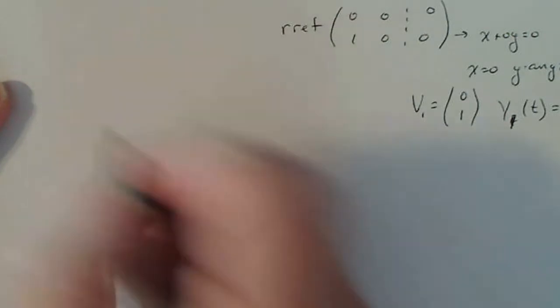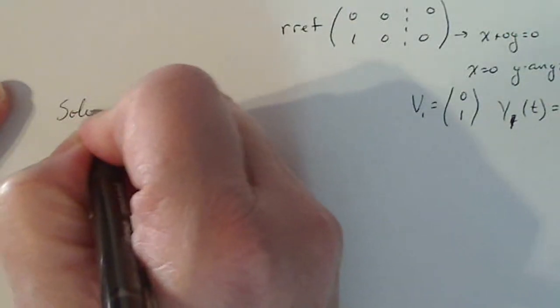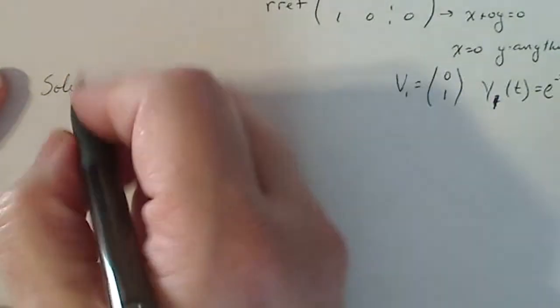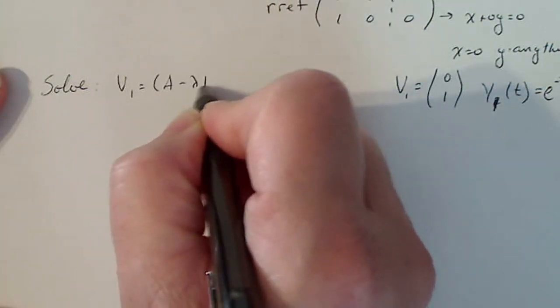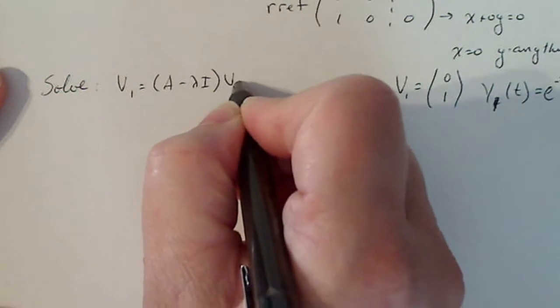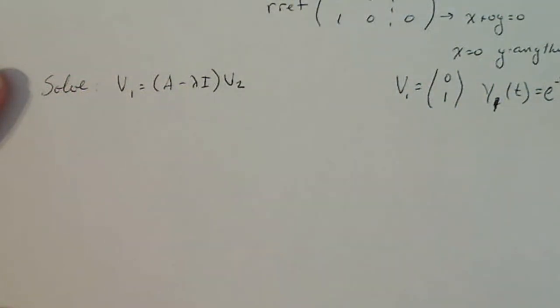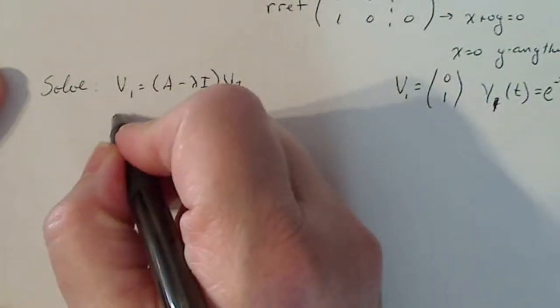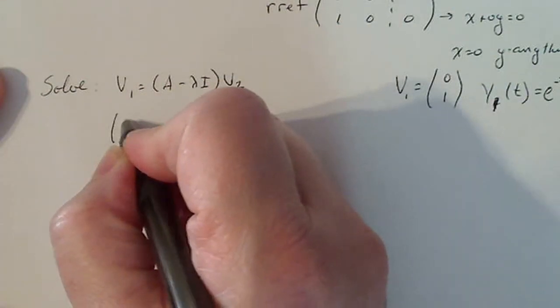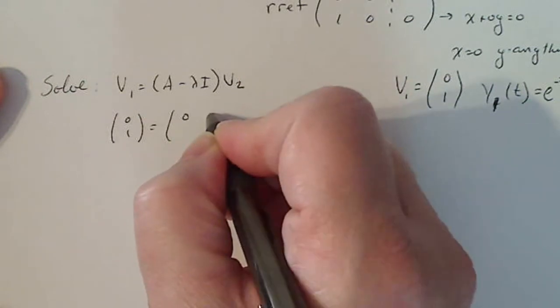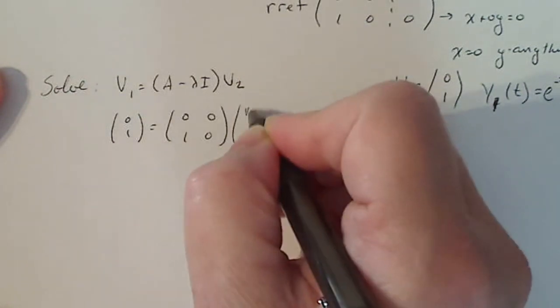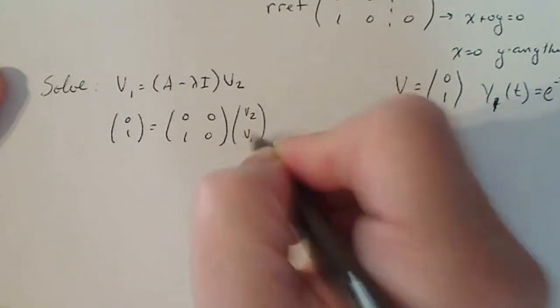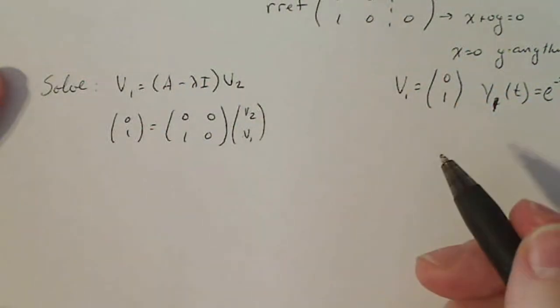So what we have to do is solve the problem v1 equals A minus lambda I times v2. And then my second vector will pop out. My second linearly independent vector pops out. So I plug everything in, I have (0,1) equals the matrix (0,0; 1,0). And v2, I'm just going to say is little v2, little v1, just to keep track of it.